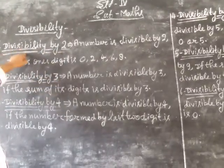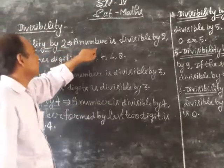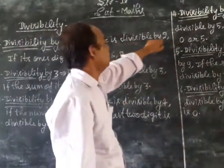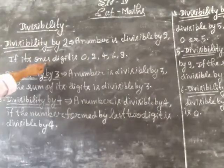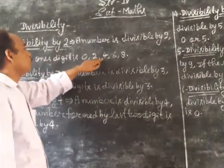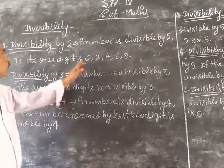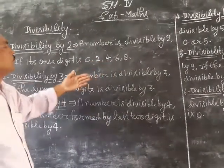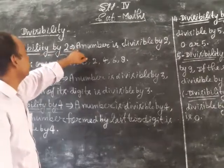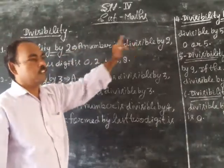Divisibility by 2: A number is divisible by 2 if its ones digit is 0, 2, 4, 6, or 8. We can see that this number is divisible by 2.